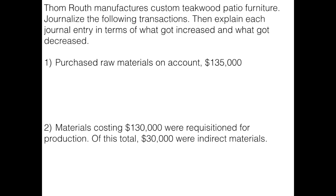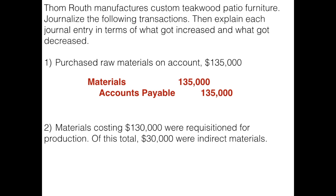In this case our materials are going up. Materials is an inventory account, and if they go up that means we debit our materials account. It says we are purchasing them on account, meaning we're not paying cash right now, so we're not crediting cash — our liability account is going up. So we would debit our materials account for the $135,000 and credit accounts payable.